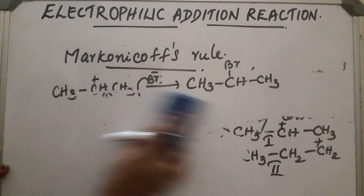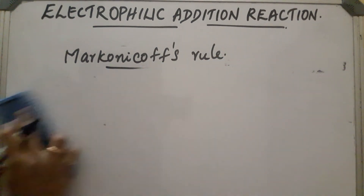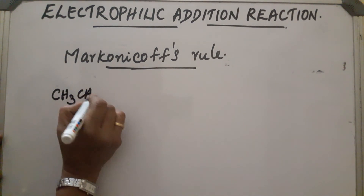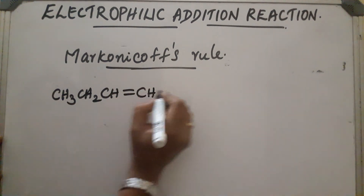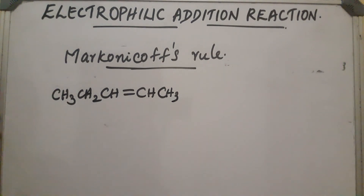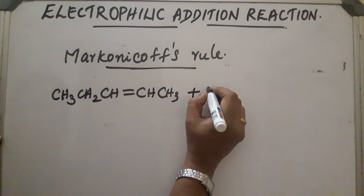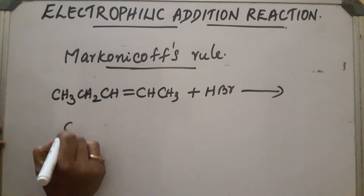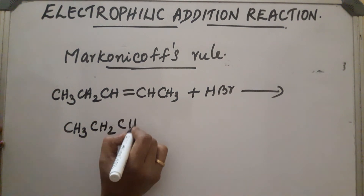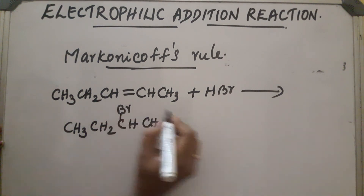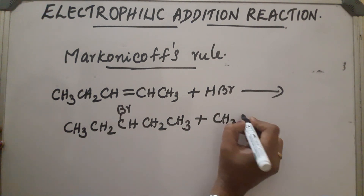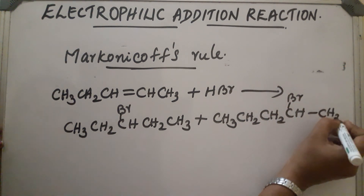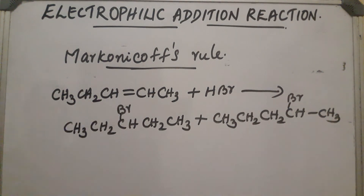In the case of unsymmetrical alkenes containing the same number of hydrogen atoms on the carbon atoms — for example, CH3-CH2-CH=CH-CH3 — both carbon atoms contain the same number of hydrogen atoms. So a mixture of compounds will be obtained. Either Br can attack one carbon or the other, giving CH3-CH2-CHBr-CH2-CH3 and CH3-CH2-CH2-CHBr-CH3 as a mixture.